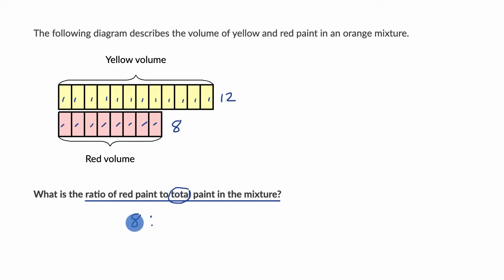The total paint for every eight parts red would be the eight parts red plus the twelve parts yellow. So it'd be eight plus twelve, which is twenty. And this is true. The ratio of red paint to the total paint in the mixture is eight to twenty.